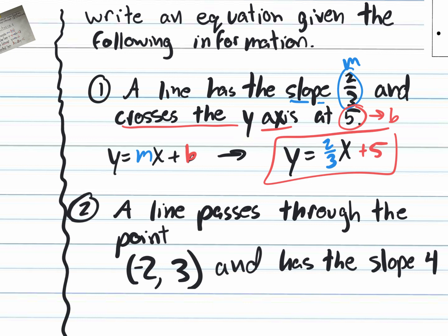If they had said write it in standard form, you'd still start with slope-intercept since they gave you slope and intercept. Once it's in slope-intercept, then worry about converting to standard: AX plus BY equals C, no fractions. You'd multiply everything by 3 to clear the fraction, then move the x over to the left side and the number to the right.